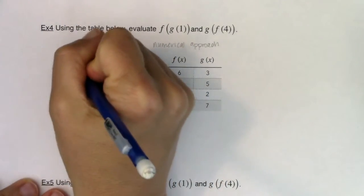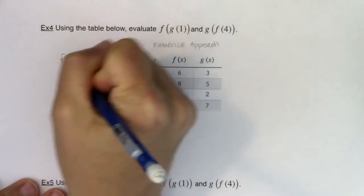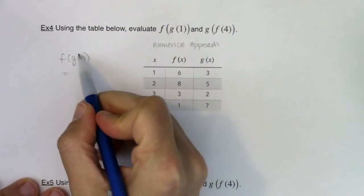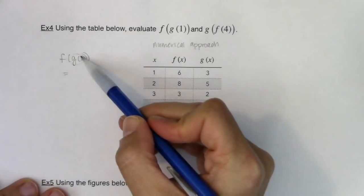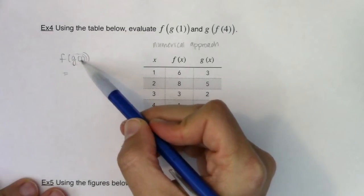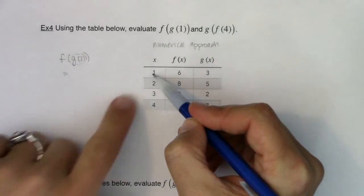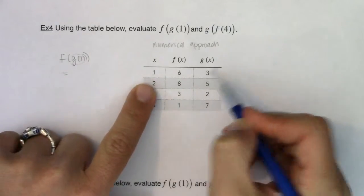All right, so the first one I want is f of g of 1. So let's see what we have. The first thing I want to do is figure out what is g of 1 equal to. Well if I want g of 1 that means x is 1. Inside my innermost parentheses is x being 1. I would like the g value of that so that will be 3.